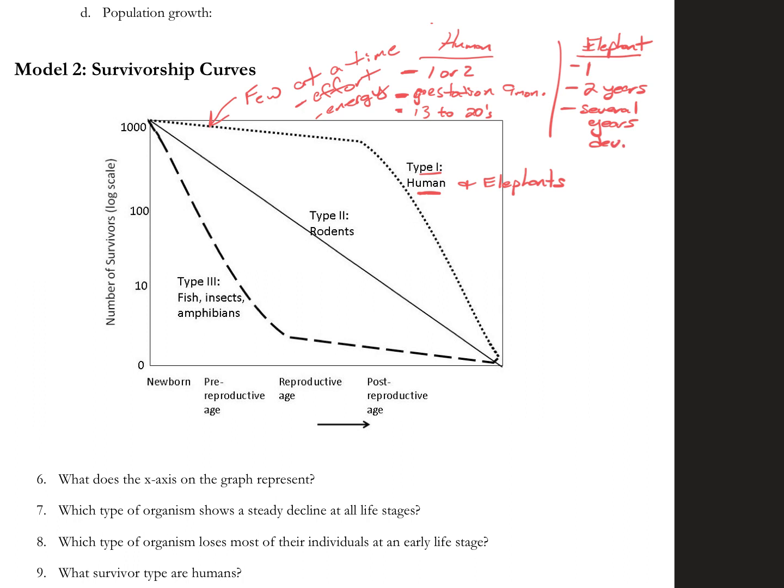That being said, the whole point here is that in this type of survivorship curve, most of the young survive. And it's only after we get older, it's only after we get older, the older ones die more often.